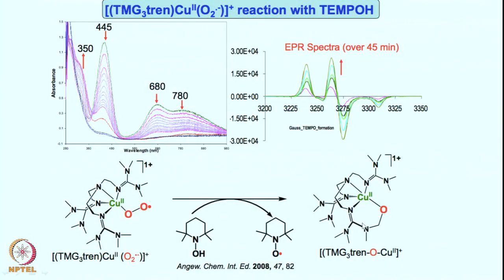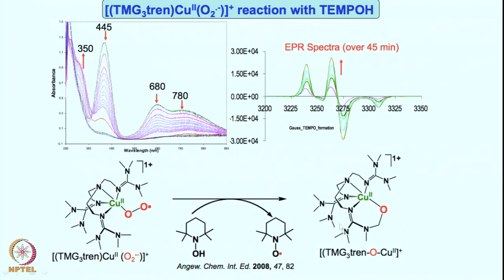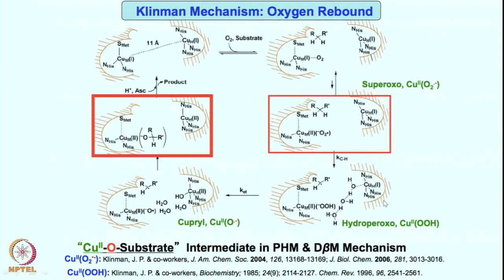The debate is still ongoing. As we were discussing, there is a copper alkoxo intermediate — in these cases, this copper alkoxo intermediate looks exactly similar to what is found in the enzyme. Let us come back to this in the subsequent class. Keep studying and we will see you soon. Thank you.